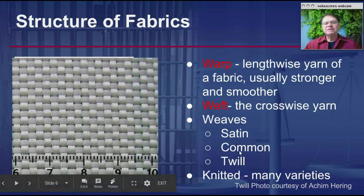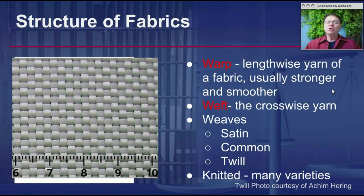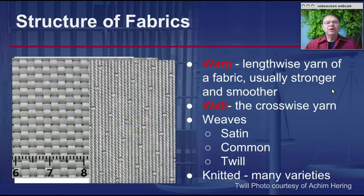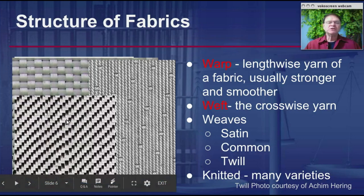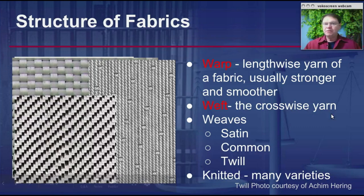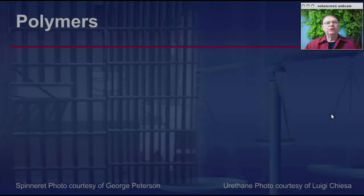Of the three weaves — satin, common, and twill — the common weave shows an alternating pattern of both warp and weft. Satin includes fewer crosswise yarns, giving it a very smooth feel, referred to as a smooth hand. The twill has a staircase pattern, and the most common place you see twills is in blue jeans.